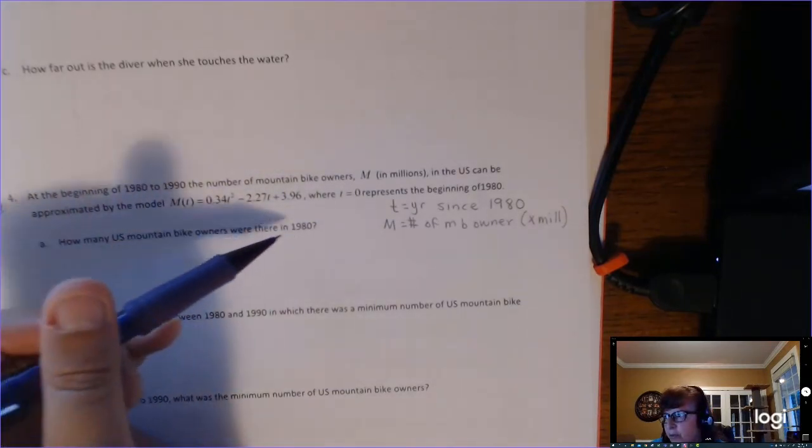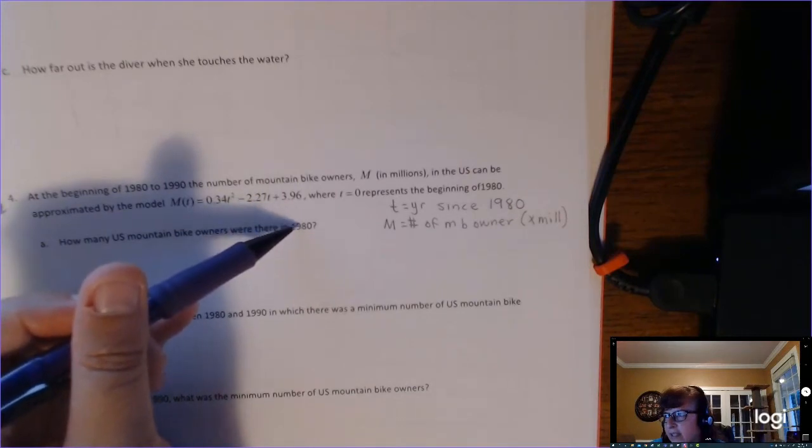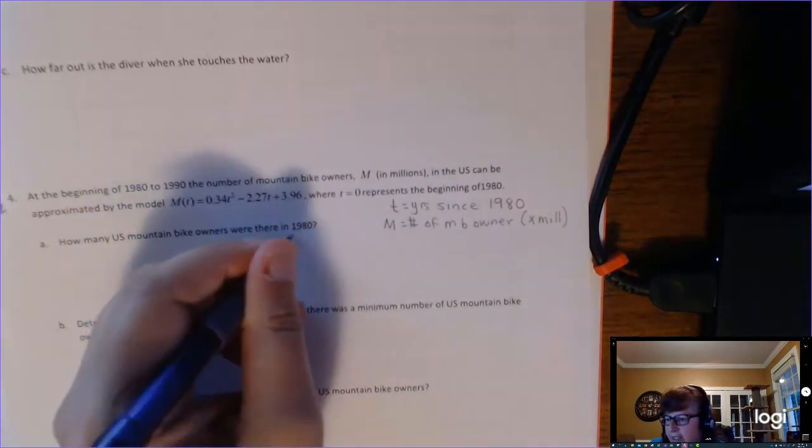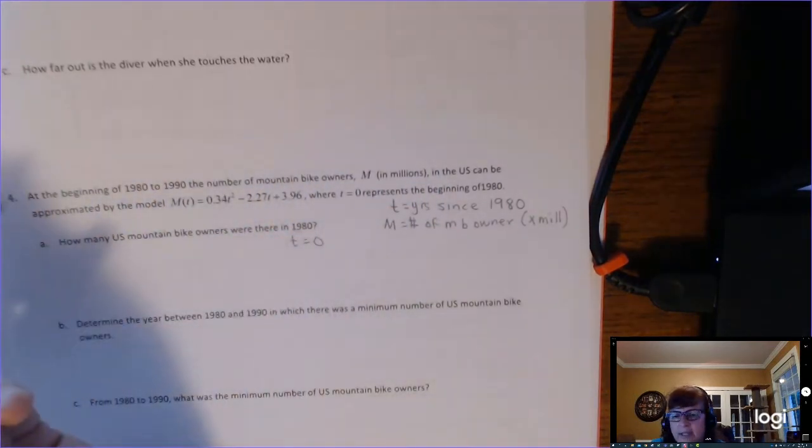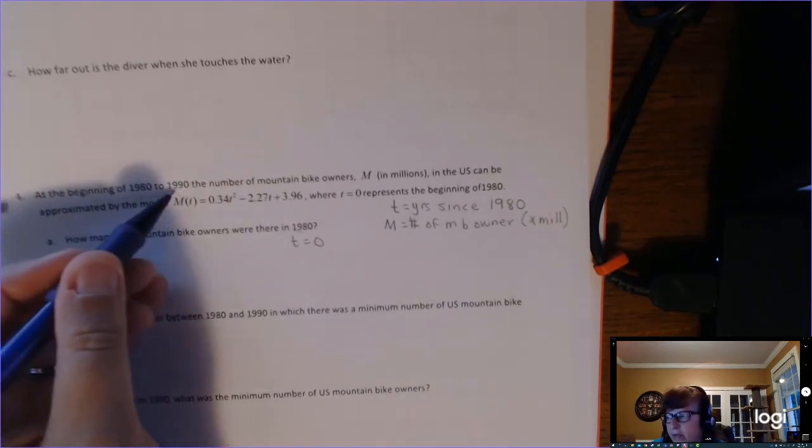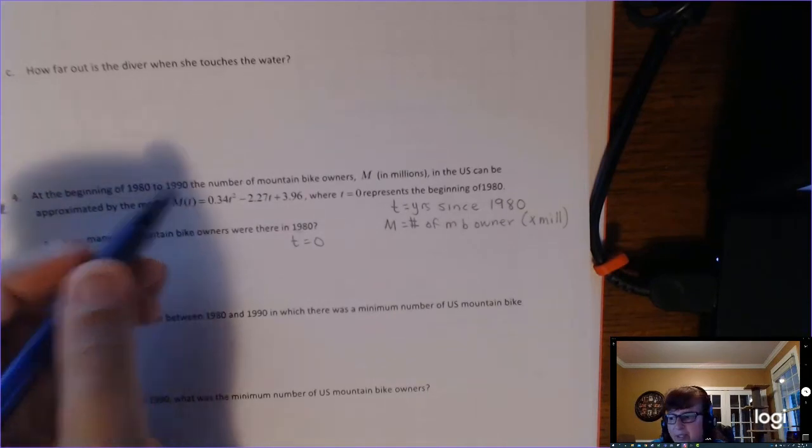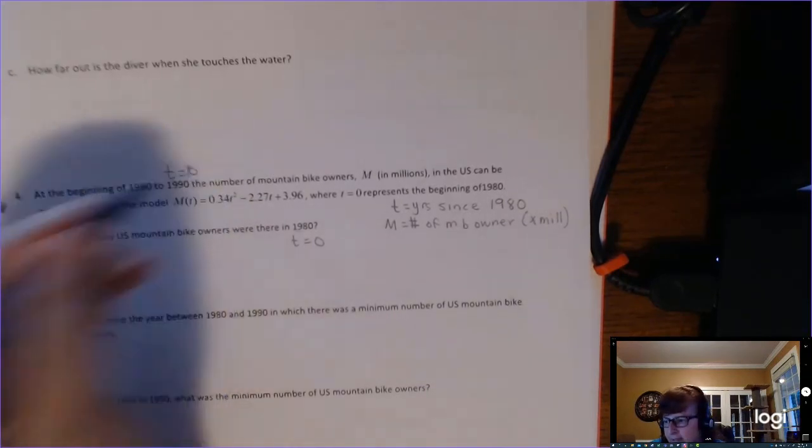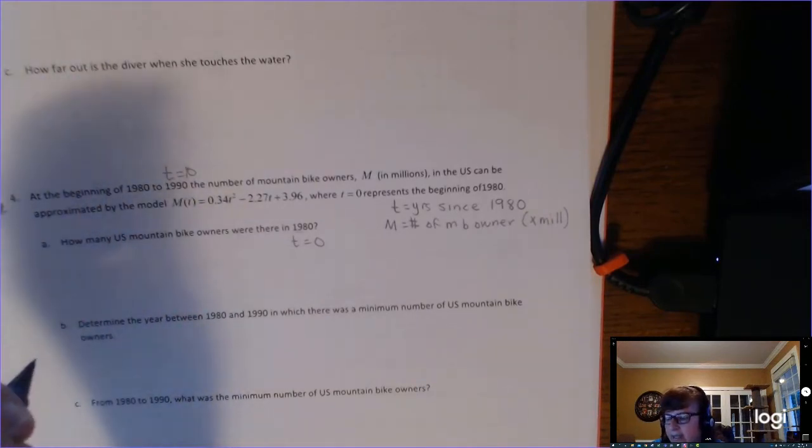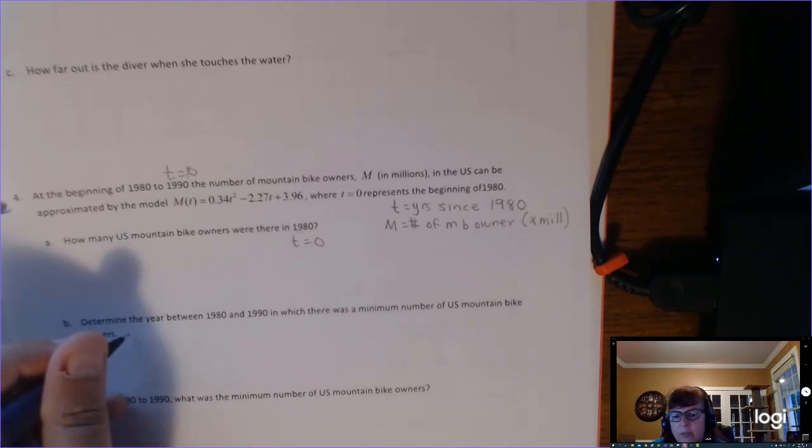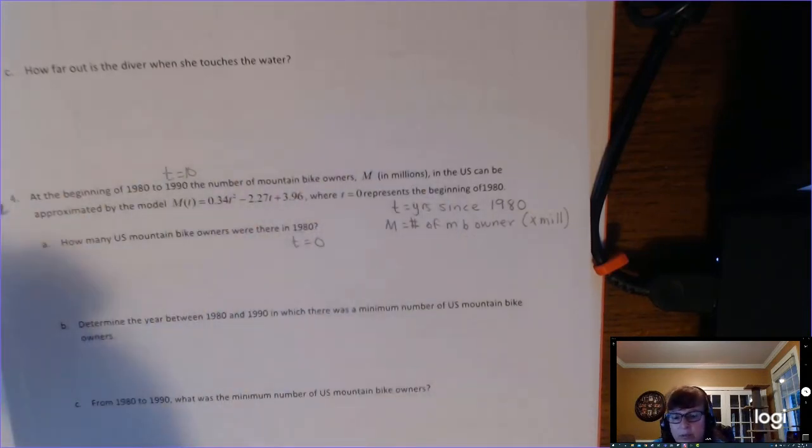So you have to understand what that means. So like this one, how many mountain bikers were there in 1980? 1980 is the real world year, but we want to use T equals zero since 1980 is zero years from 1980. If I wanted to know how many mountain bikers there were in 1990, then I would put 10 in. Okay, if I get an output of like 1.4, that means 1.4 million when you interpret it.